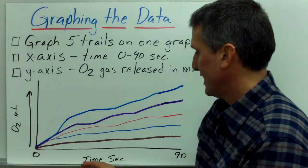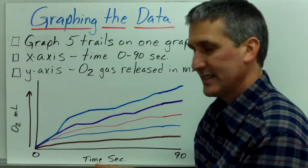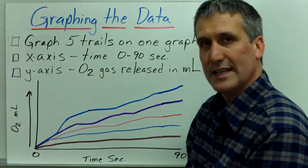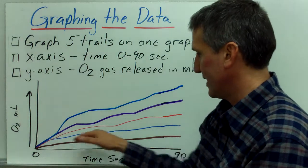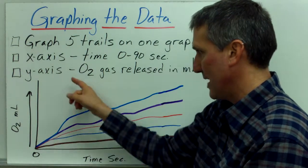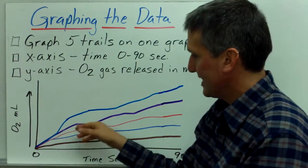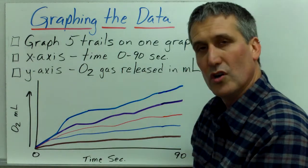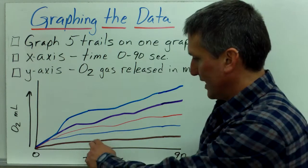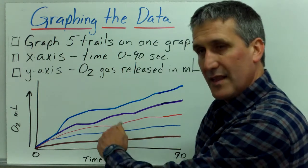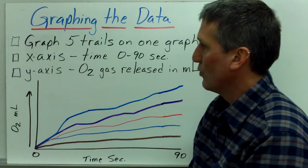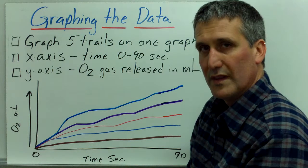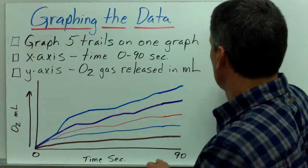As you can see, we have time in seconds on the x-axis, and then we have the amount of O2 released on the y-axis. As the enzyme concentration increases, this graph actually shows that the reaction rate is increasing. If you look at the slope of these lines, they are increasing. We will be able to take a look at that with the actual data which we produce.